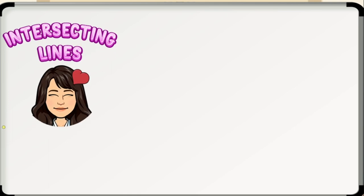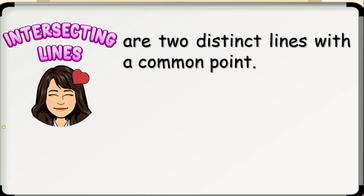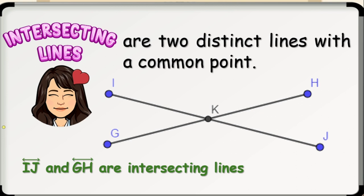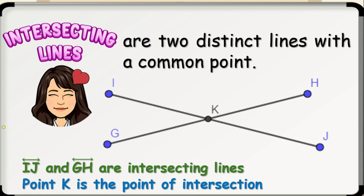First, we have the intersecting lines, which are two distinct lines with a common point. Here is an example, where line IJ and line GH are intersecting lines and point K is the point of intersection.